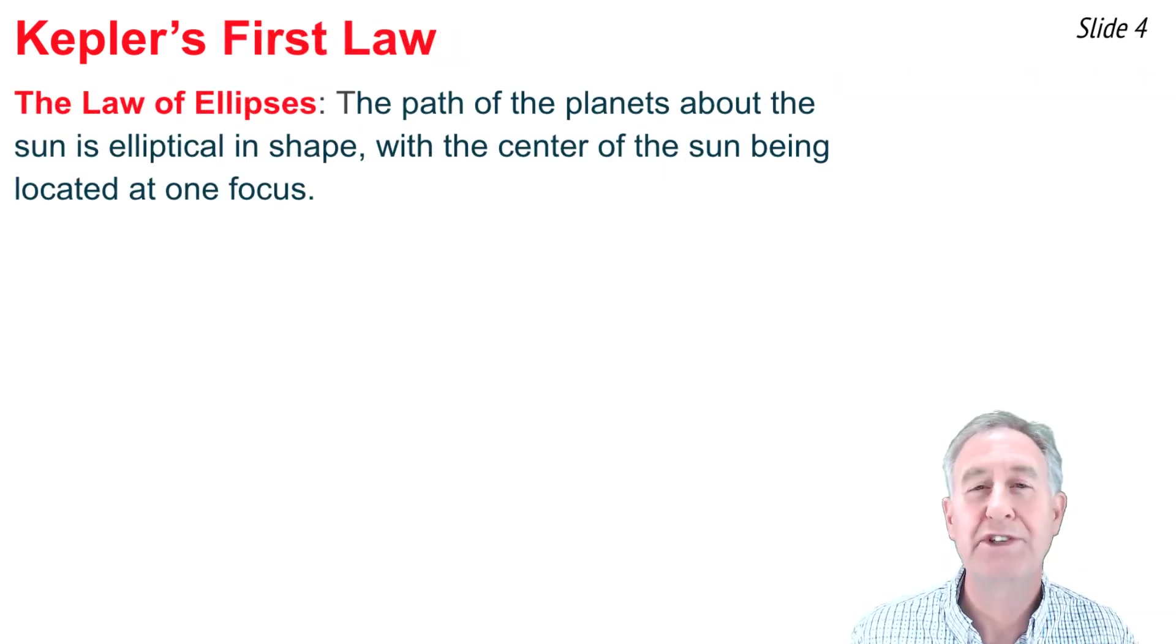Kepler's First Law is known as the Law of Ellipses. It states that the path of the planets about the sun is elliptical in nature, and the center of the sun is located at one of the foci of the ellipse.